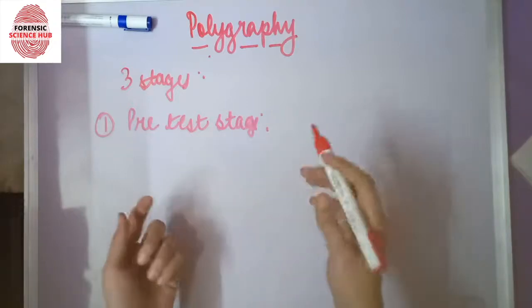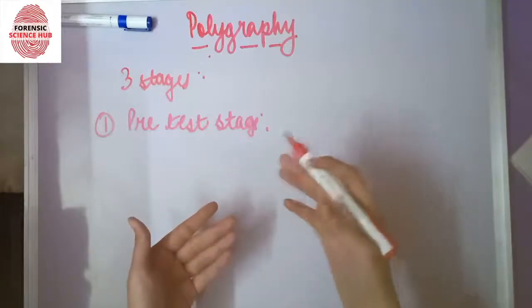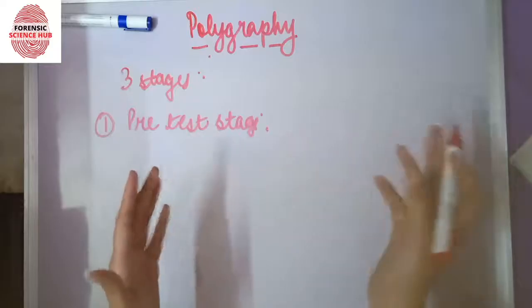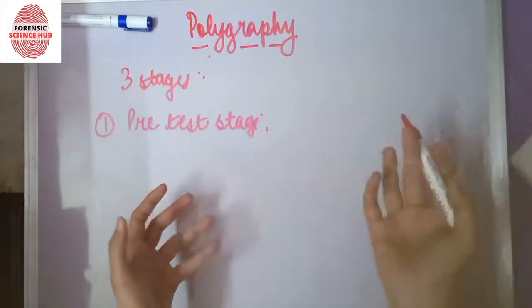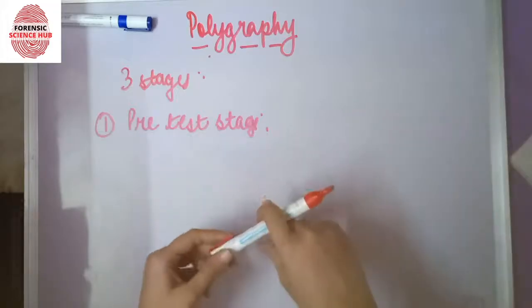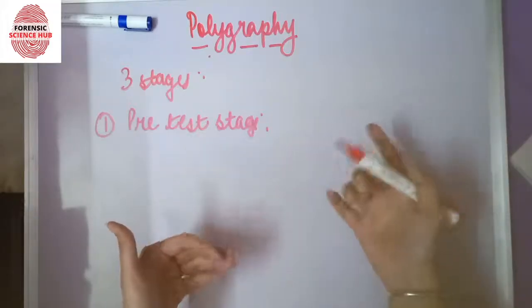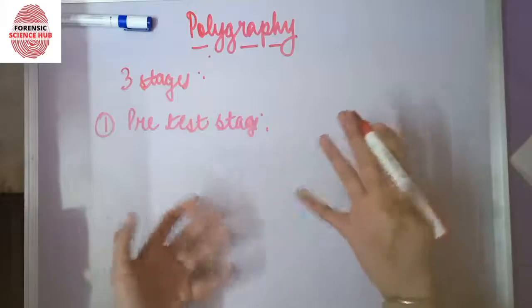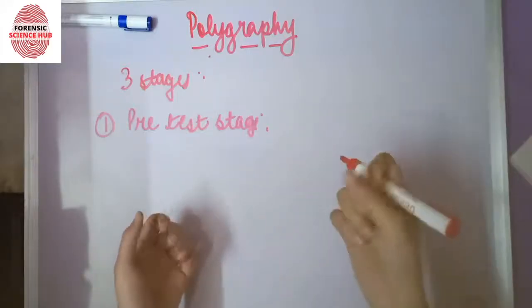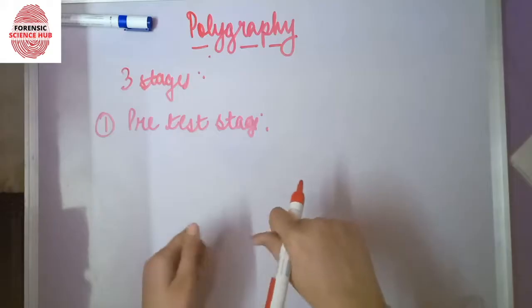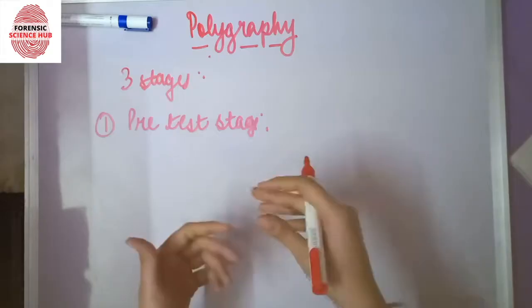The examiner provides a detailed explanation of the polygraph instrument, its principles, different components, and how the machine works. They ask if the person has any queries, then formulate and review with the examinee all questions that will be asked during the test.